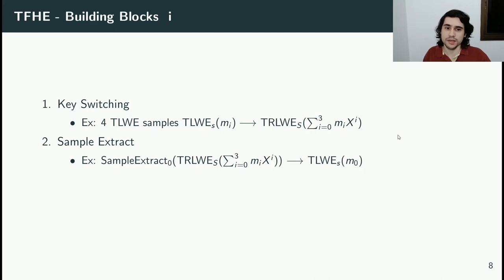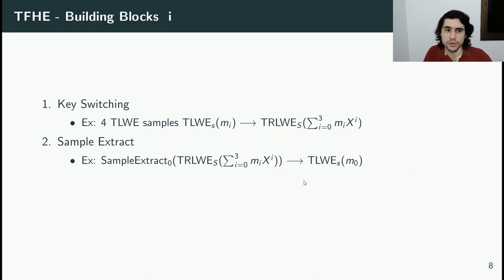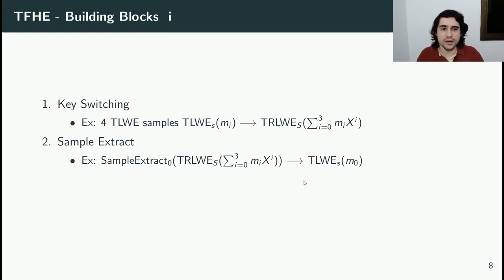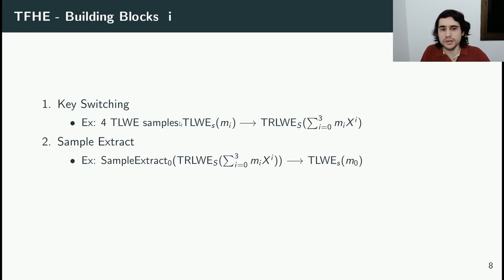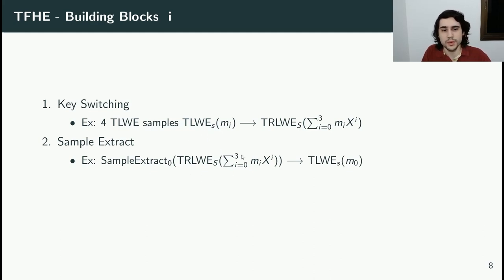TFHE has three main building blocks necessary for the bootstrap. The first is key-switching, which has several uses, but the main one here is the packing of scalar samples into polynomial samples. For example, here we have four scalar samples each encrypting M_i, and we can use the packing key-switch to pack these four scalar samples into one polynomial sample. The sample extract does exactly the opposite: it receives a polynomial sample and extracts the coefficient of some monomial — in this example, the monomial of degree zero.